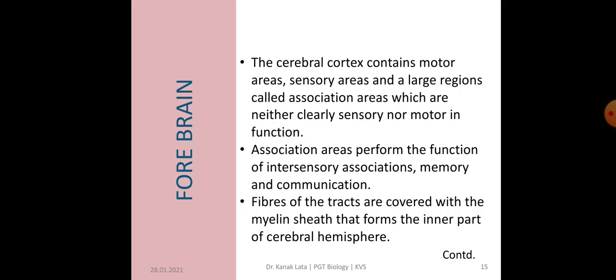Both left and right cerebral hemispheres are connected by a tract of nerve fibers called corpus callosum. Cerebral hemisphere is covered by layers of cells called cerebral cortex, which contains motor area, sensory area, and a large region called association area, which are neither clearly sensory nor motor in function. These association areas perform the function of intersensory association, memory, and communication. Fiber tracts are covered with myelin sheath that forms the inner part of cerebral hemisphere.